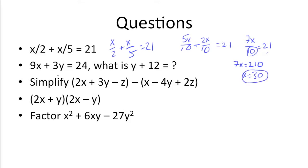So next up, we have 9x + 3y = 24. What is y + 12? What we need to do to solve for this question is to isolate the y in this equation, and then plug that value into y here to get us what y + 12 is in terms of x. So if we move this down here, let's move the 9x over to the other side. So we need to subtract both sides by 9x. And we get 3y = 24 - 9x.